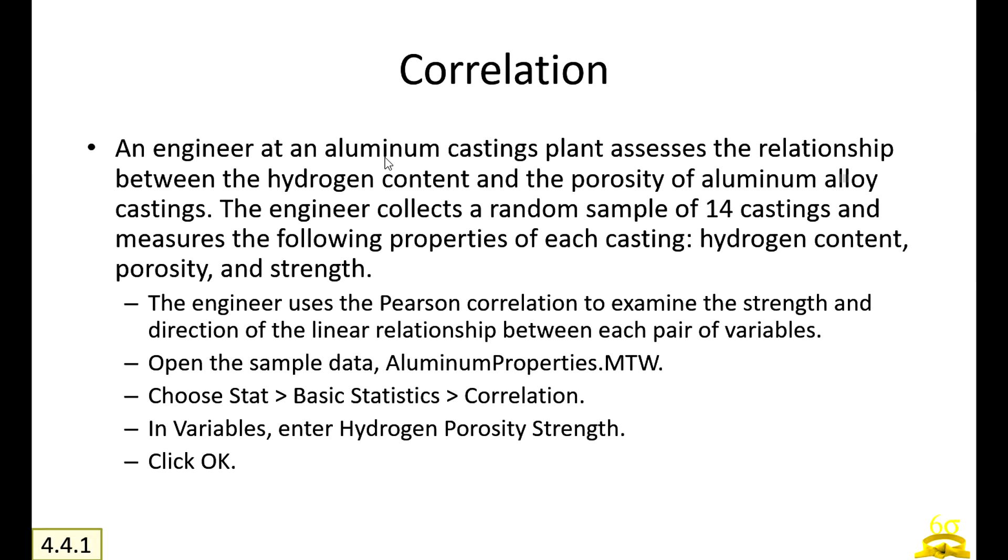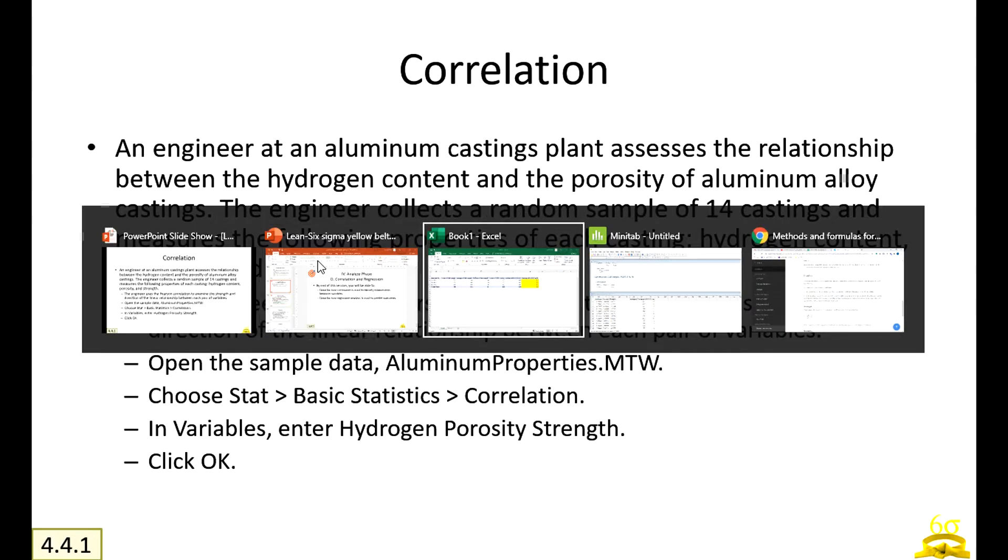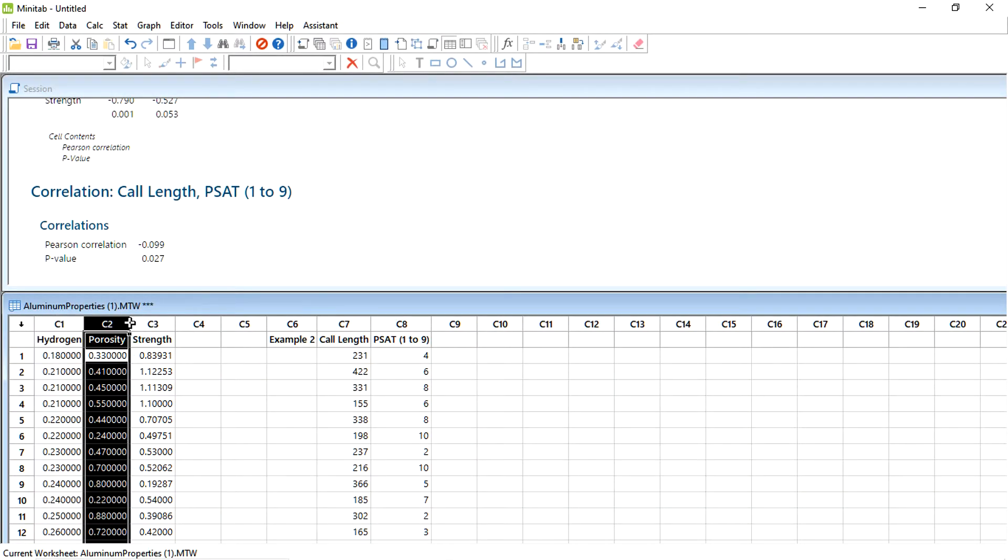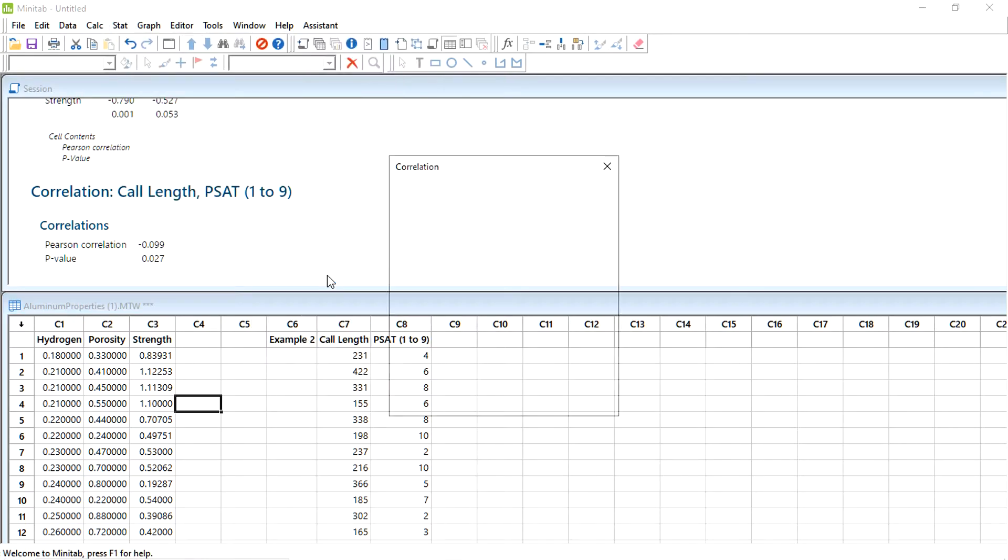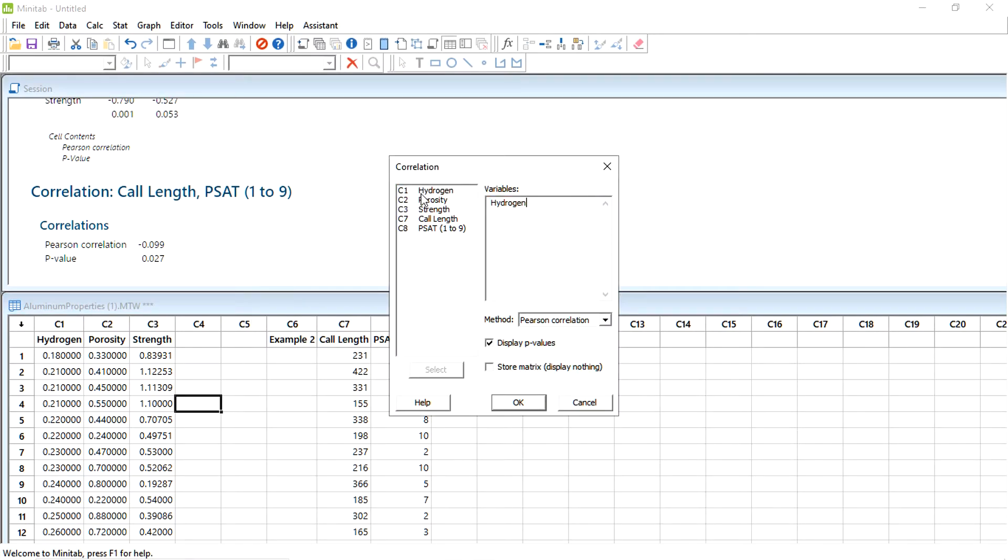Let me share with you two examples where you can understand it. An engineer at an aluminum casting plant assesses the relationship between hydrogen content and the porosity of aluminum alloy castings. The engineer collects samples of 14 castings and measures the following properties for each casting: hydrogen content, porosity, and strength. Let's go back to Minitab. I already have the data, so let me go to Stat, Basic, and then Correlation. We will select hydrogen, porosity, and strength.